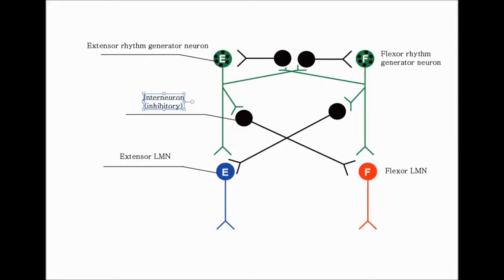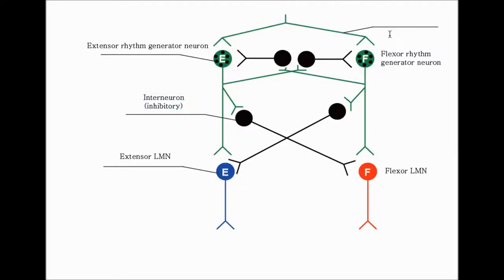The final component is to add the descending signal — the descending signals from the brainstem area. This is via the upper motor neuron, specifically the medial upper motor neuron, and more specifically the reticulospinal tract.